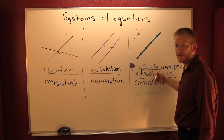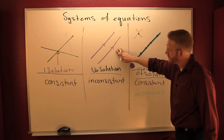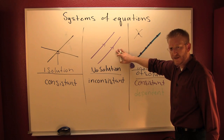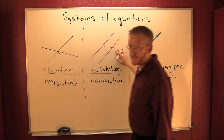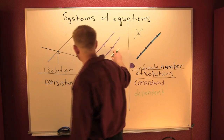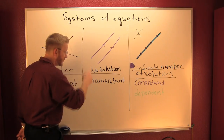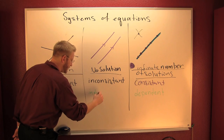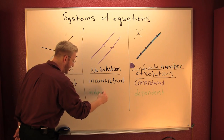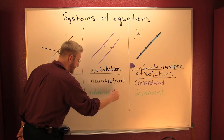If they're the same line, they're dependent. Are these the same line? No — they're completely different lines; they just happen to be going in the same direction. These are independent.